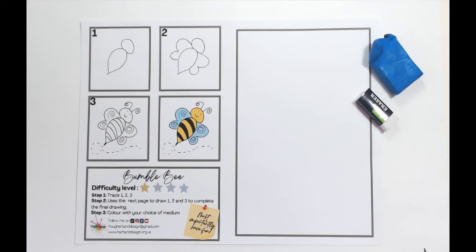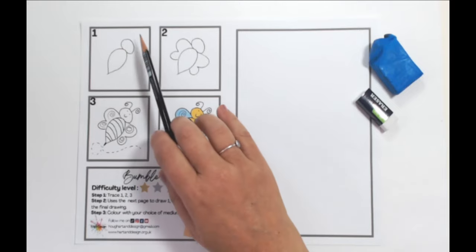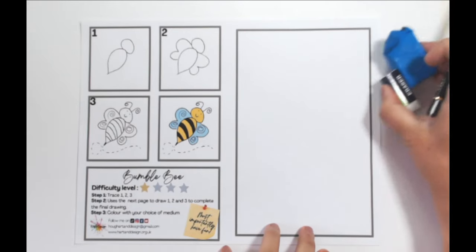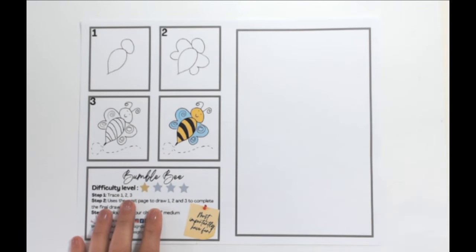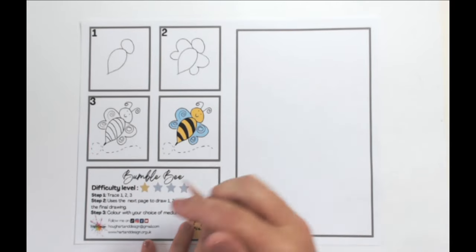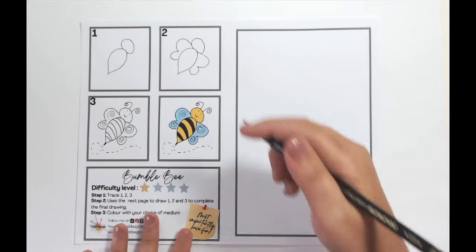So basically everything we do, we follow the sheets, but everything we do in a drawing of any kind is always going to be made up of shapes. So we start with step one and we trace one, then we trace two, then we trace three. And then we have a draw on our own, and that way we're just teaching our brain how to do it by tracing first.